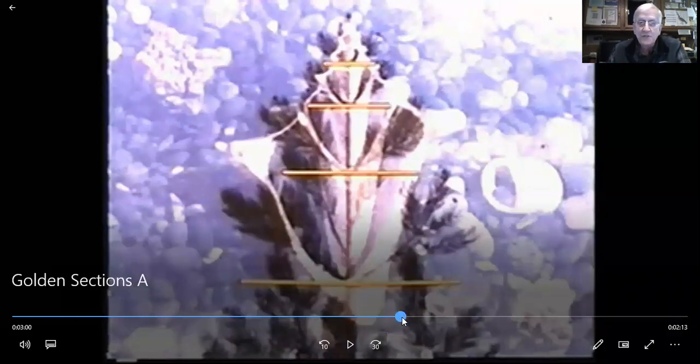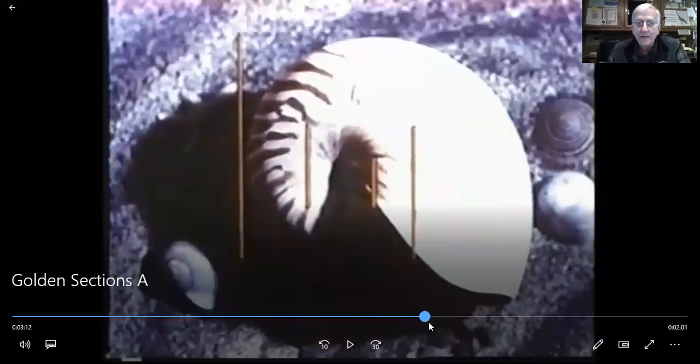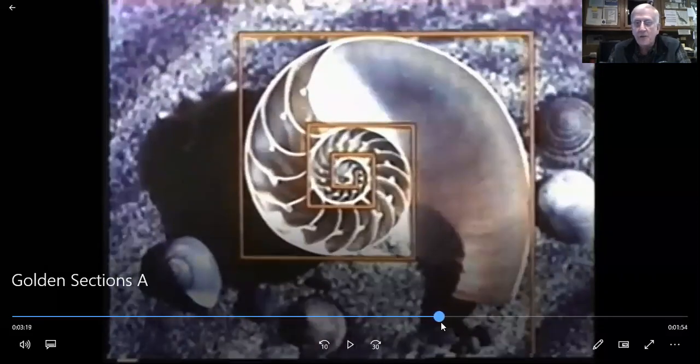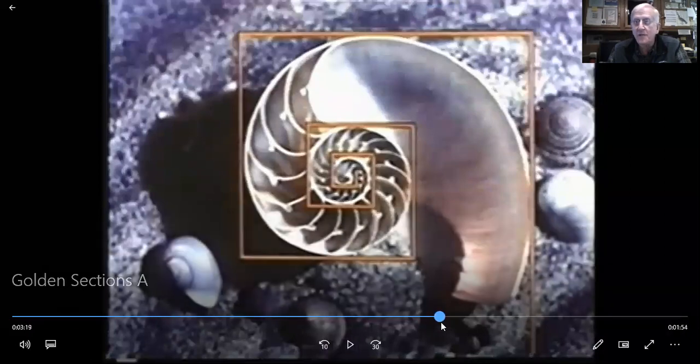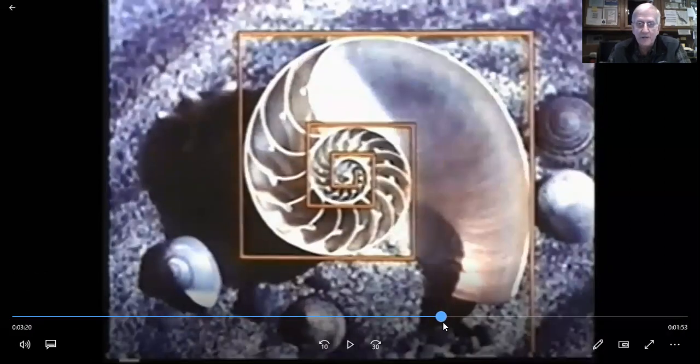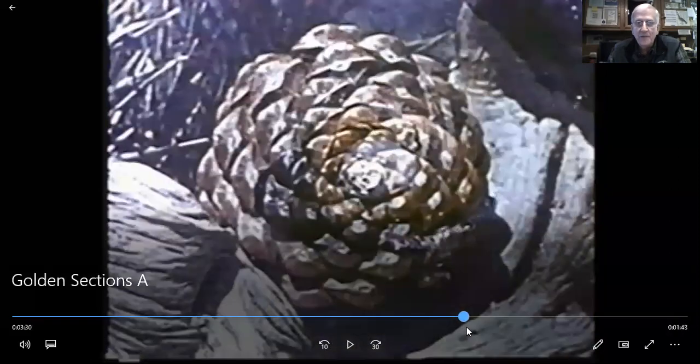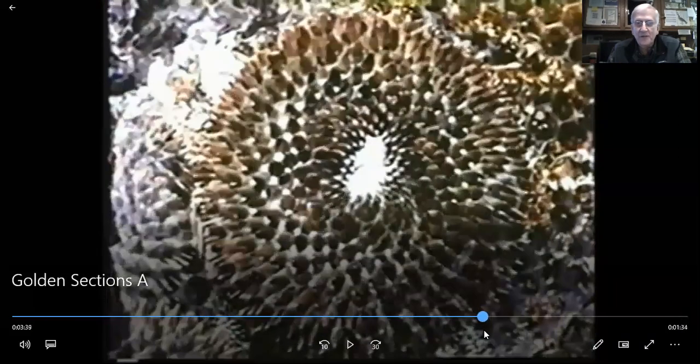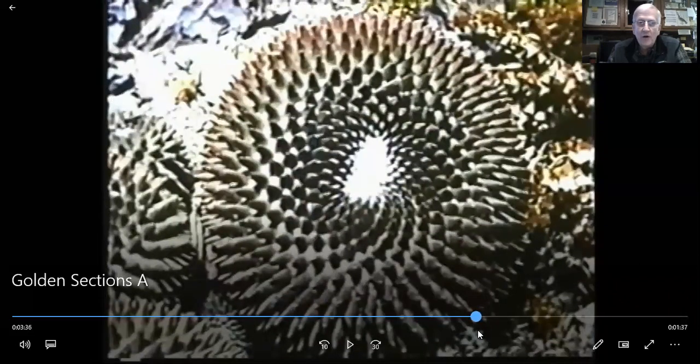So you see this everywhere in nature, all right, and you can draw this spiral as you're going to see in the next video you're going to watch from Dr. Berger. But we'll save that for that, but these are all examples of things that you realize involve the golden ratio.